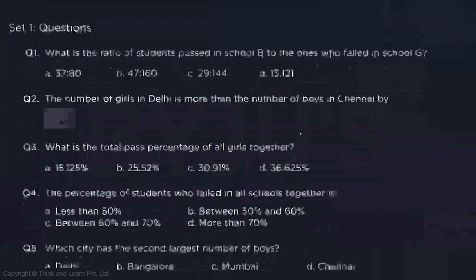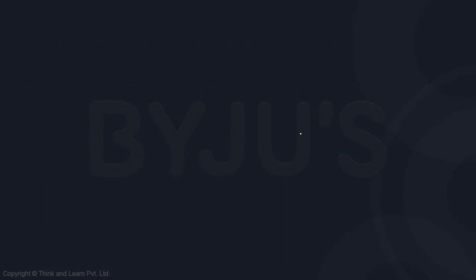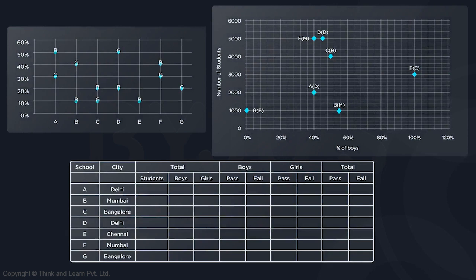The table has columns for: school name, city, total students, number of boys, number of girls, boys passed, boys failed, girls passed, girls failed, and total passed and failed. Let's complete this table school by school.